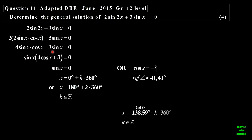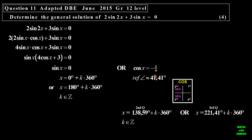Let's look at another one. We've got 2 sine 2x plus 3 sine x. I can't factorize directly, so I use the identity: sine 2x is 2 sine x cosine x. I expand there and then I can factorize that. Taking sine x out as a common factor, I end up with 4 cos x plus 3. Sine x can be 0, or cosine x can be negative 3 quarters. Sine is 0 at 0 degrees and 180. I add the generating term plus k times 360. Here I find the reference angle of 41.41. Cosine is negative in the second and third quadrant. So it's 180 minus that, which gives me 138.59, and it's 180 plus that, which is 221.41. And I add my generating term k times 360, where k is an element of the integers.